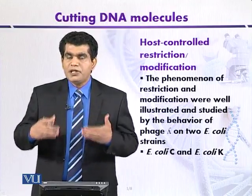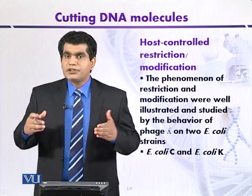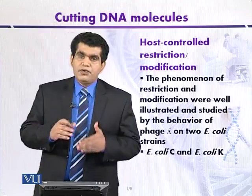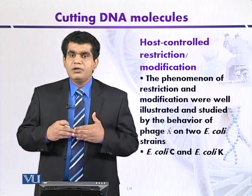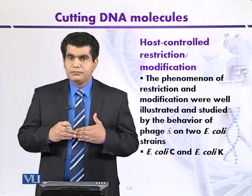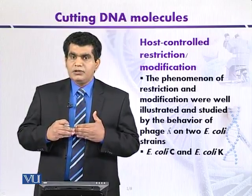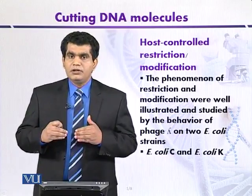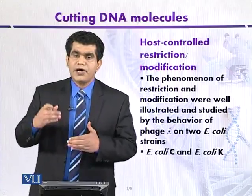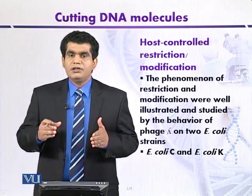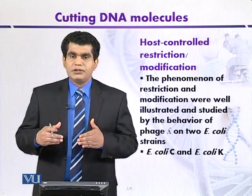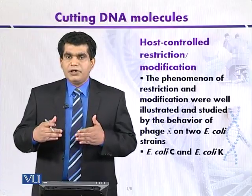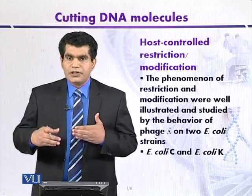The reason plating efficiency is low on E. coli K is because of the restriction system of the host organism, which restricts bacteriophage entry or replication. However, if those restricted phages are used to re-infect the same strain, E. coli K, they will no longer be restricted. They will multiply, and their multiplication will be indicated by high efficiency of plating and more plaques.